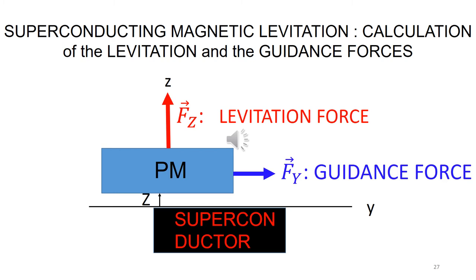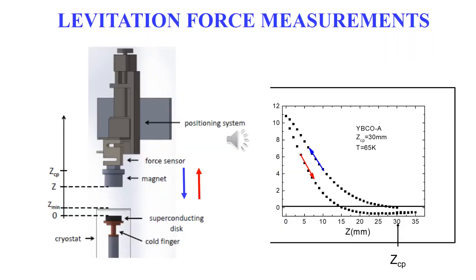In the lab, for commodity, we generally measure the forces applied to the magnet. For measuring the levitation force, the superconductor is firstly cooled down at distance zcp from the magnet. Then, the distance between the magnet and the superconductor is reduced down to z-min, where the motion of the magnet is reversed.